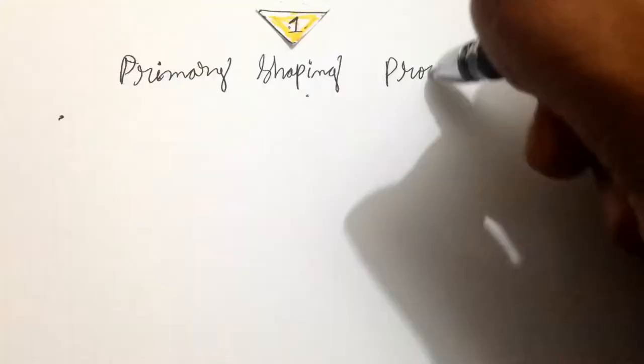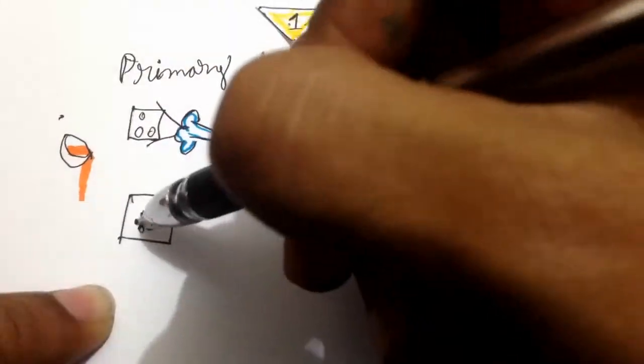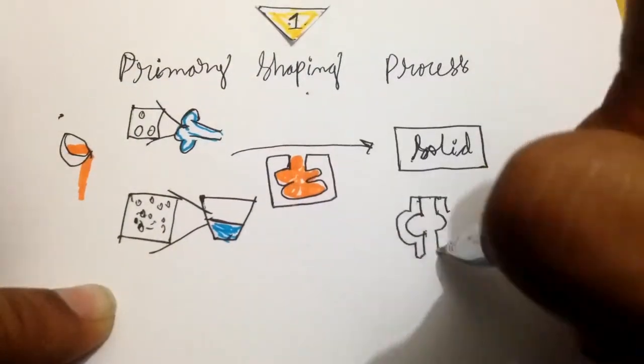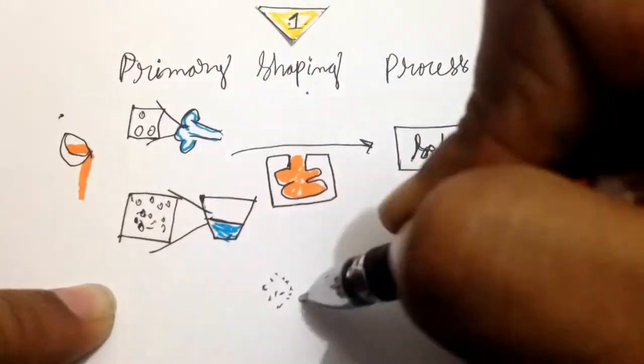The first being primary shaping process which is the production of solid body from a molten state, gaseous state, or amorphous materials like glass poured into a hollow space of desired shape. Examples include casting and powder metallurgy.